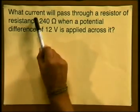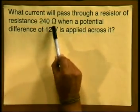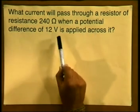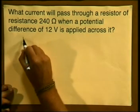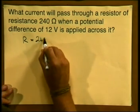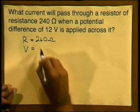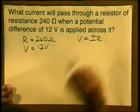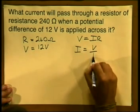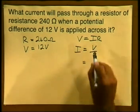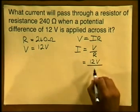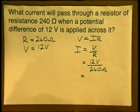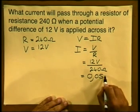Now let's calculate current using the same equation. What current will pass through a resistor of resistance 240 ohms when a potential difference of 12 volts is applied across it? R = 240 ohms, V = 12 volts. Using V = I × R, rearranging gives I = V divided by R. Substituting in: 12 divided by 240 gives us a current reading of 0.05 amperes.